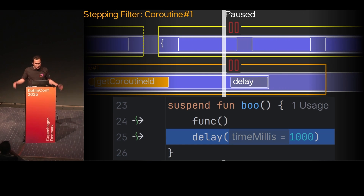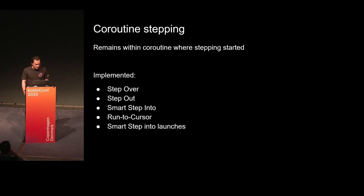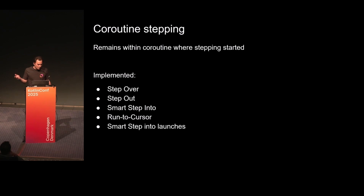The stepping is done, we paused before the next function. So let's summarize coroutine stepping. The main characteristic is that it remains within the coroutine where it started. We implemented: step over, step out, smart step into, and run to cursor.